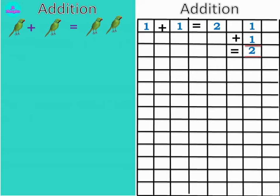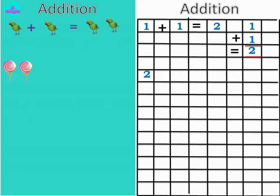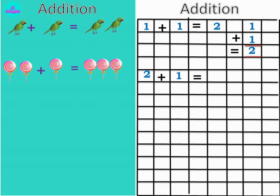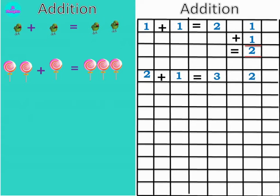Now let's see the next example — candies. Count the candies: one, two. How many candies are here? Two candies. Plus — now how many candies are here? One. So two plus one equals three. Now count the candies: one, two, three — three. Two plus one is equals to three. It can be written in vertical form also like this. Two plus one equals to three.